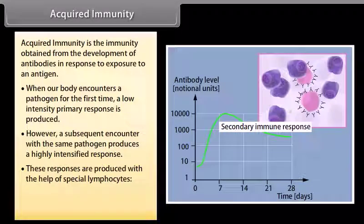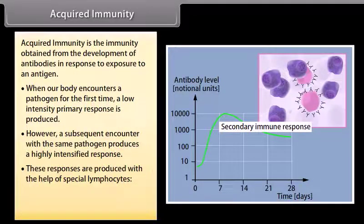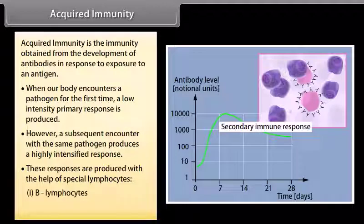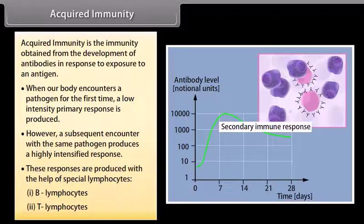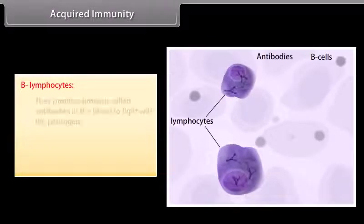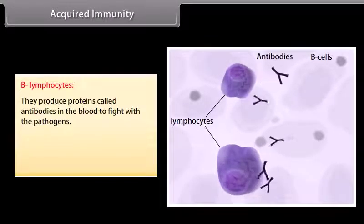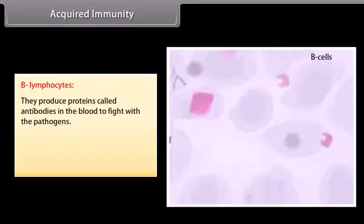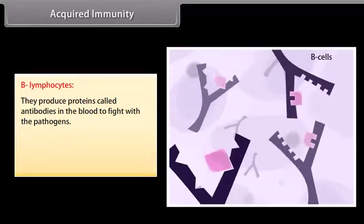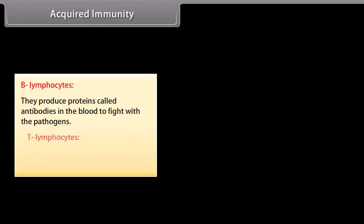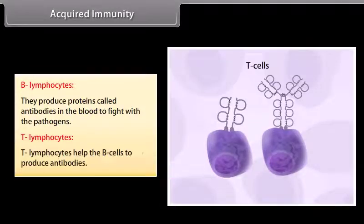These responses are produced with the help of special lymphocytes: B-lymphocytes and T-lymphocytes. B-lymphocytes produce proteins called antibodies in the blood to fight with the pathogens. T-lymphocytes help the B-cells to produce antibodies.